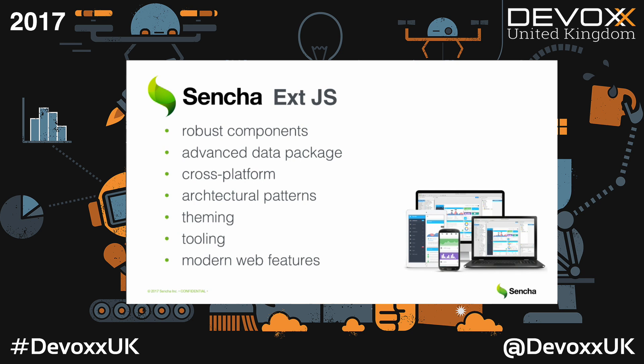Ext.js has a huge amount of robust built-in components optimized to work with huge data sets. To handle these data sets, we have an advanced data package that can be configured to communicate with a server using different protocols, receive data in different formats, and can basically be integrated with any backend or database. It's a completely cross-platform framework, supporting all browsers from modern ones down to Internet Explorer 8 and 9. In enterprises it can be critical to support legacy browsers because of security reasons - they cannot just upgrade. You can develop one application with one code base and cover all devices: desktops, tablets, and smartphones.